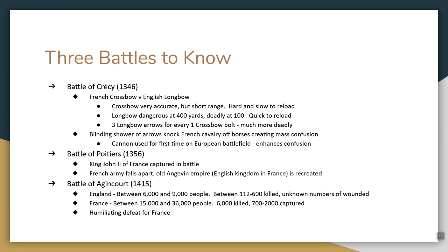What we know for sure is the English lost at most 600 people killed, with unknown numbers wounded. For the French, it was about 6,000 killed and somewhere between 700 and 2,000 captured. There were so many captured that the King of England threatened to start killing prisoners. It was an absolutely humiliating defeat for the French army.